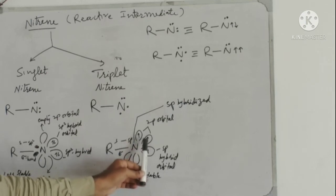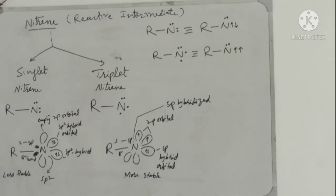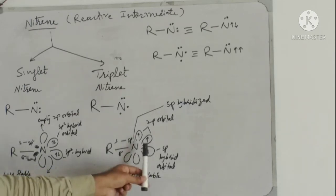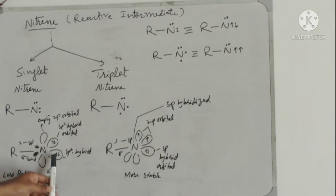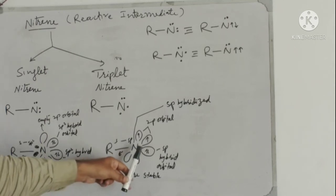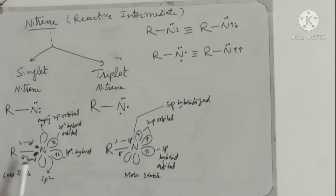These two unpaired electrons will have parallel spin. Triplet nitrenes are more stable because these two electrons have less inter-electronic repulsion, less electrostatic repulsion. In the case of singlet nitrenes, the two electrons with opposite spins have more electrostatic repulsion, whereas in triplet nitrenes they have less. So triplet nitrenes are more stable compared to singlet nitrenes, which are less stable.